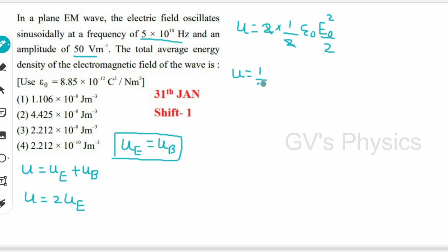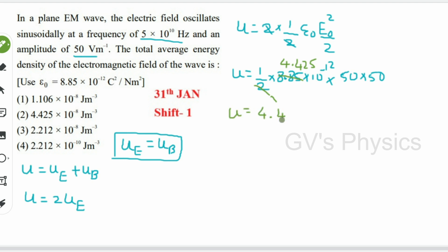Substituting values: U = (1/2) × 8.85 × 10⁻¹² × 50² = (1/2) × 8.85 × 10⁻¹² × 2500 = 4.425 × 10⁻¹² × 25 × 10² × 10⁻¹² ... calculating gives U = 1.106 × 10⁻⁸ J/m³. Option 1 is the right answer.